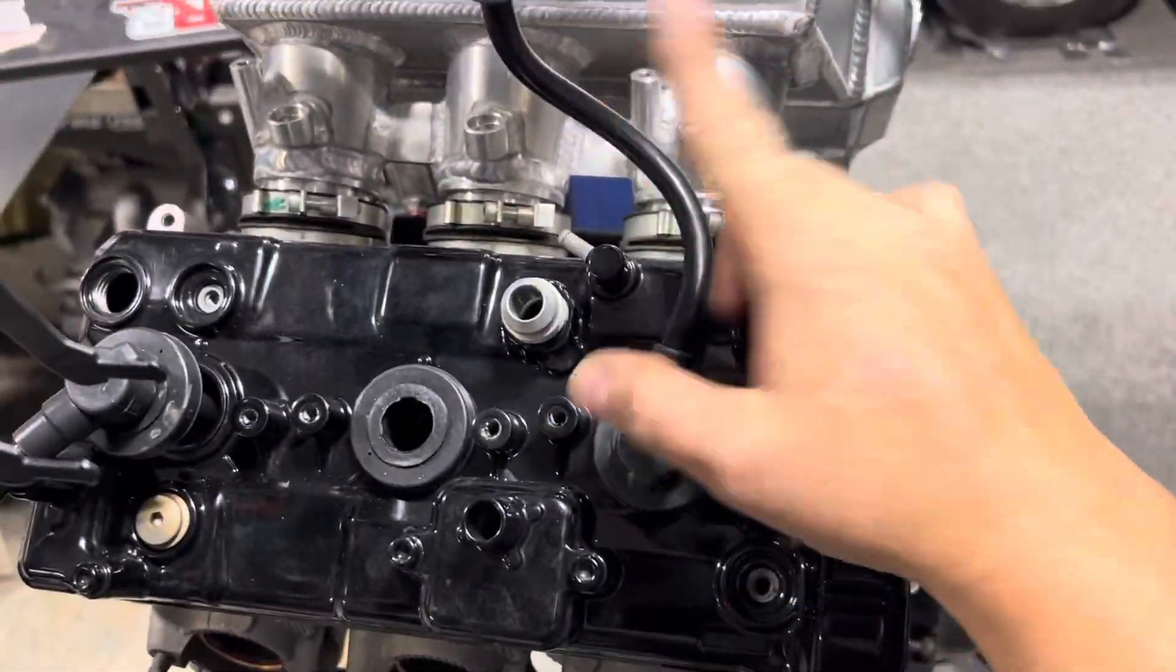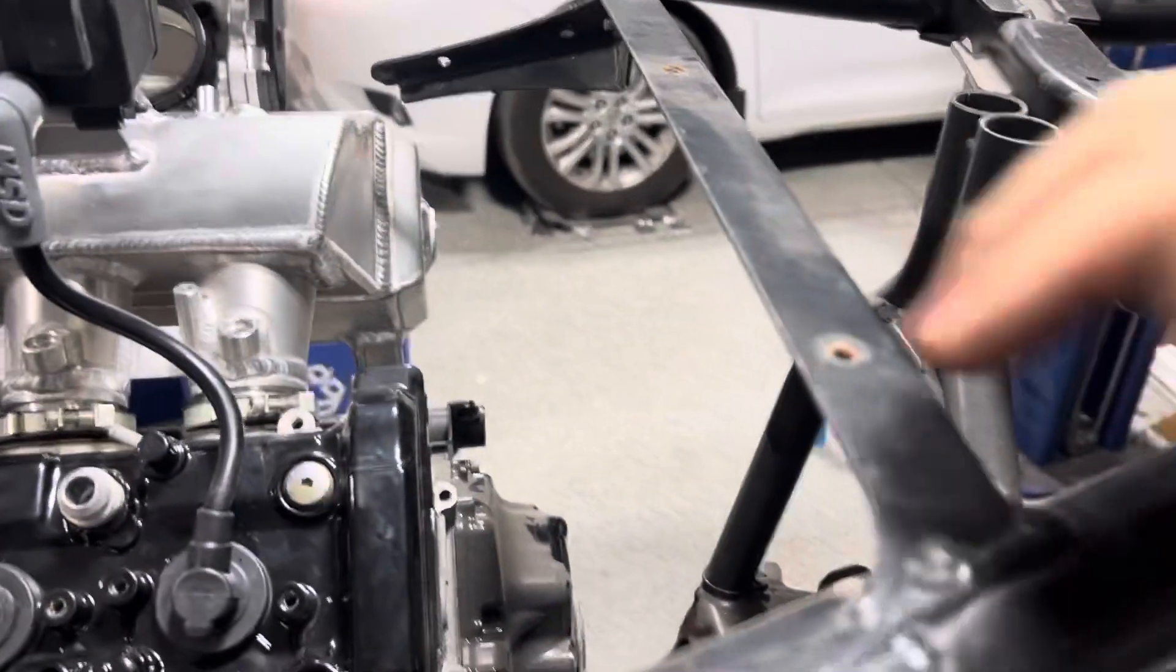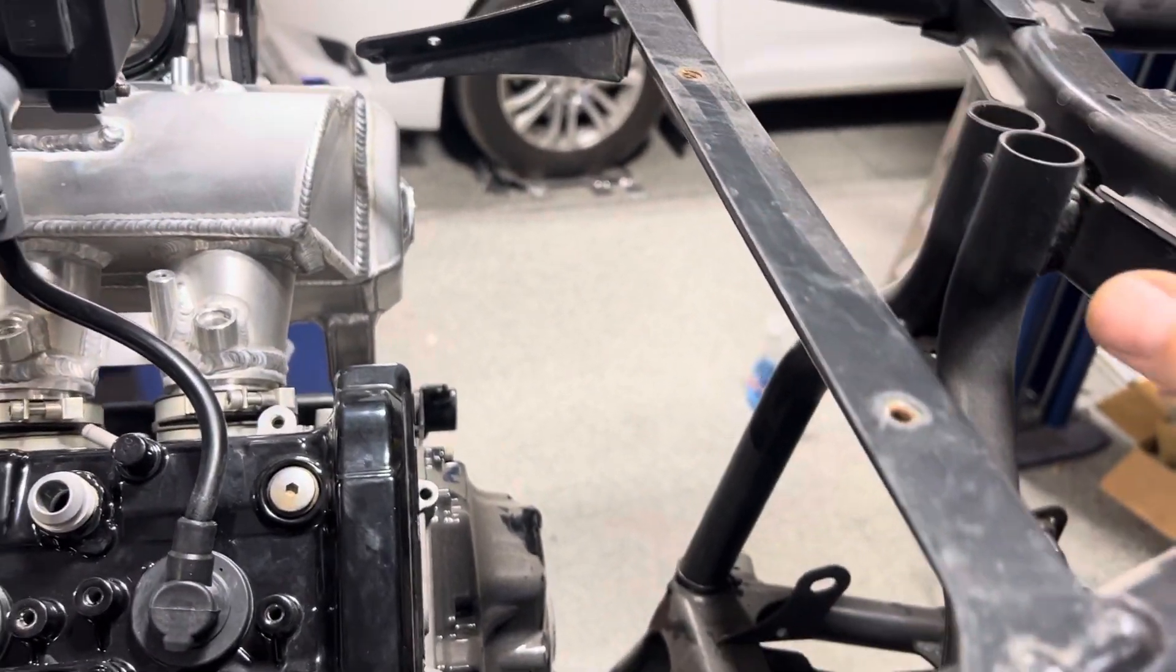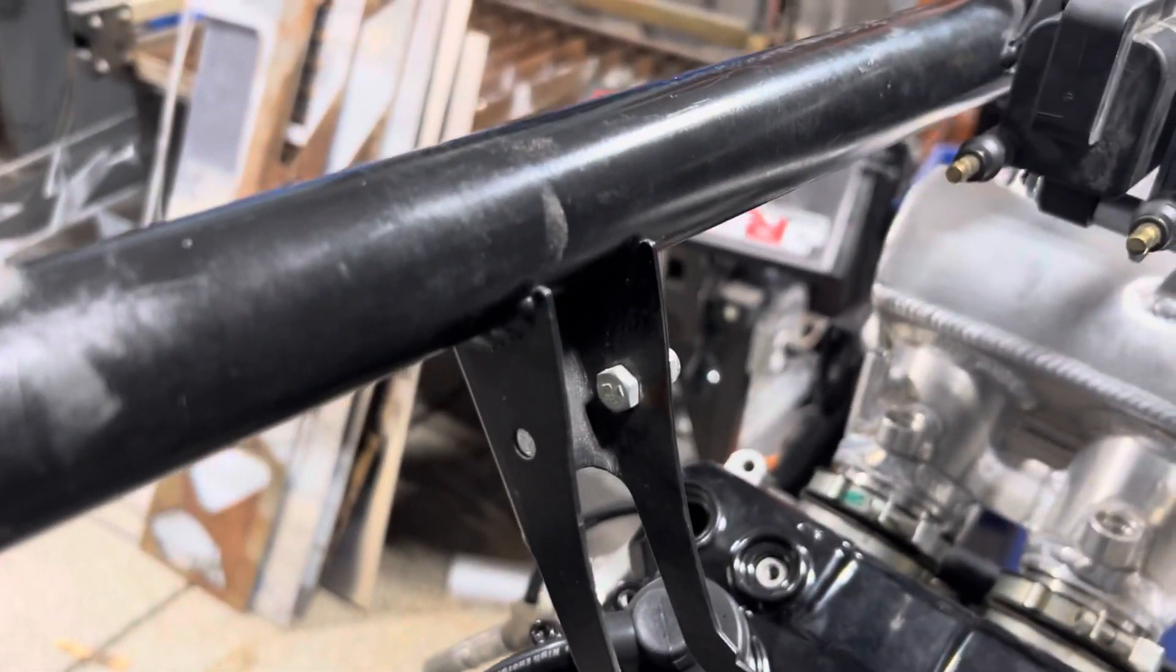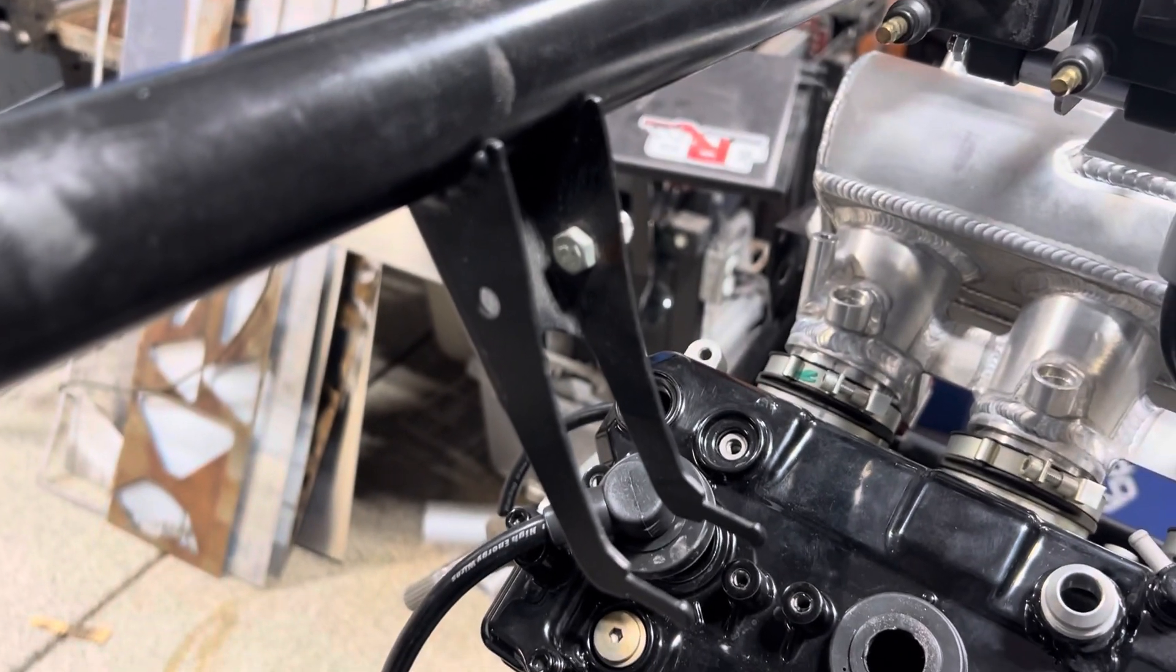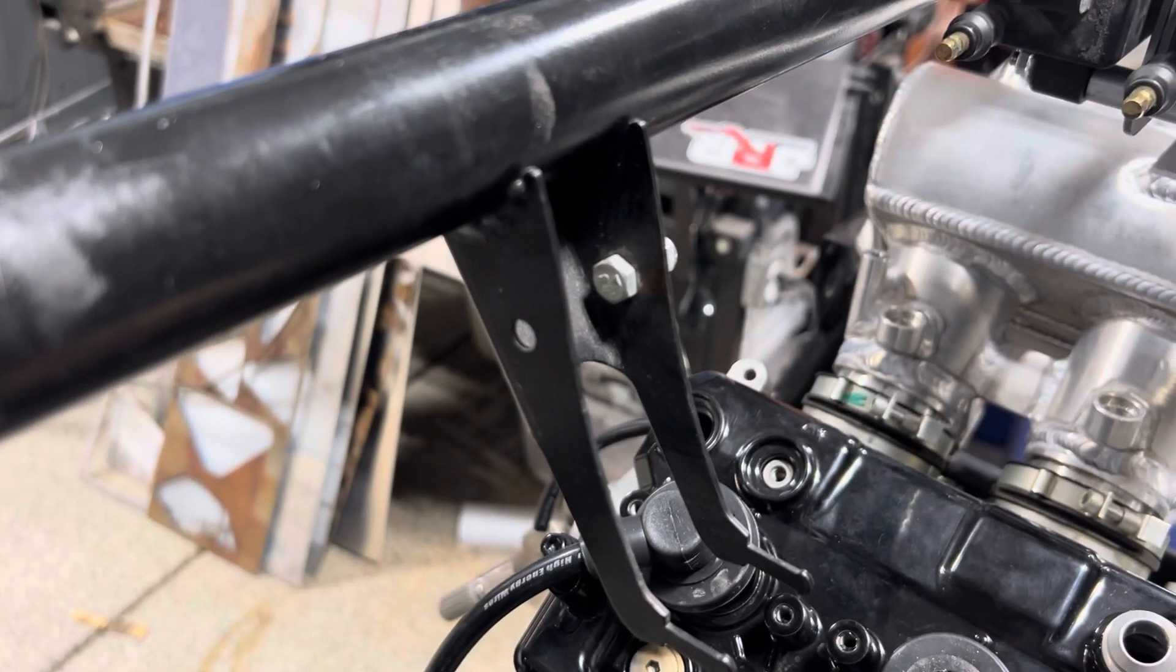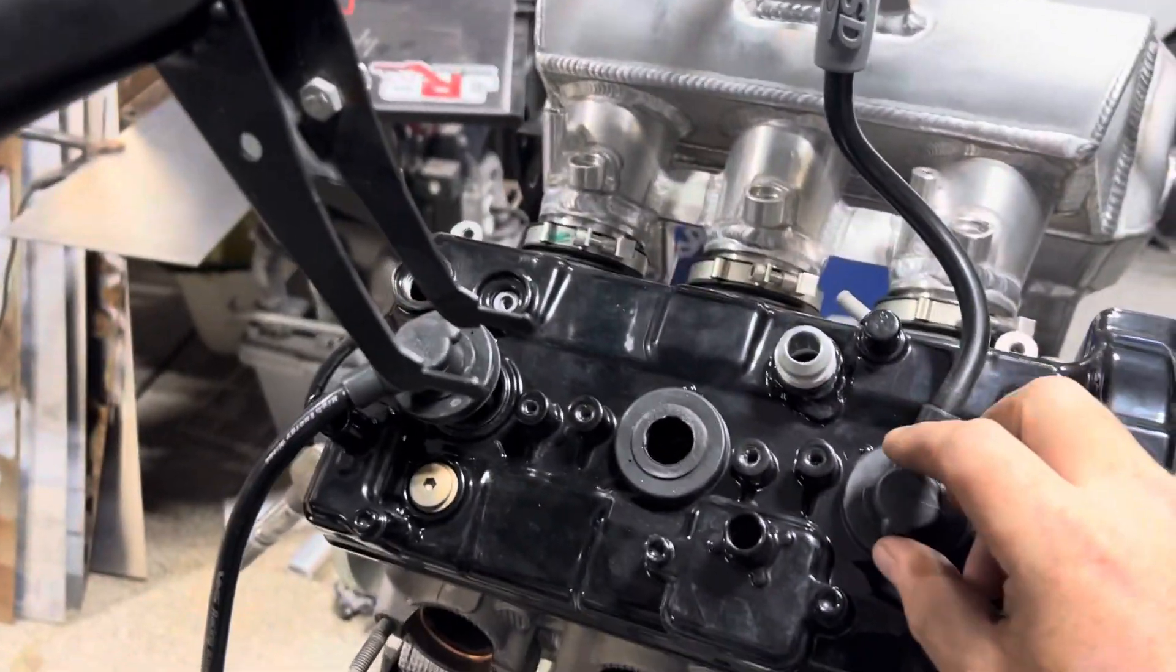I just integrated that bracket into this other mount that holds the intercooler in place. So figure out your wire lengths, wherever you're putting them. A lot of guys put them back here out of the way. You can put them on this frame tube. There's companies that sell clamps to mount these coils really wherever you want to put them.